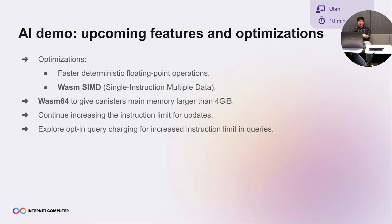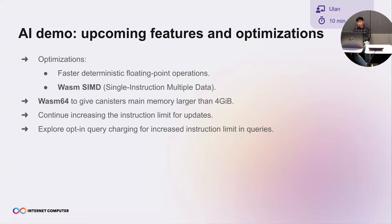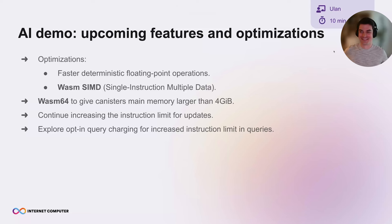We're also looking into wasm64 — right now all canisters use 32-bit WebAssembly, which limits main memory to 4 gigabytes; to go beyond that we need 64-bit WebAssembly. We'll continue increasing the instruction limit for update calls, and we've started exploring a community-suggested idea of making query charging opt-in, so developers can also increase instruction limits in queries — since the lack of query charging is the main blocker for raising that limit. That's the short-term work we're planning, and that's all from my side. Thank you.